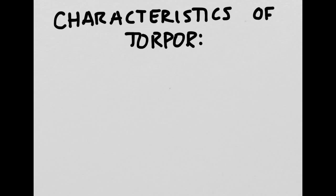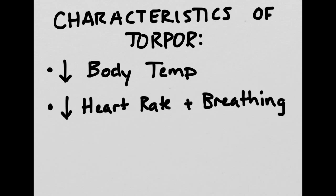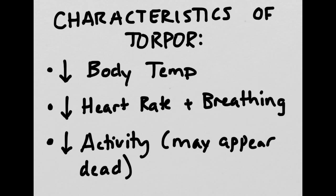There are three major characteristics of torpor: decreased body temp, decreased heart rate and breathing rate, and finally decreased activity to the point where the animal may appear to be dead.